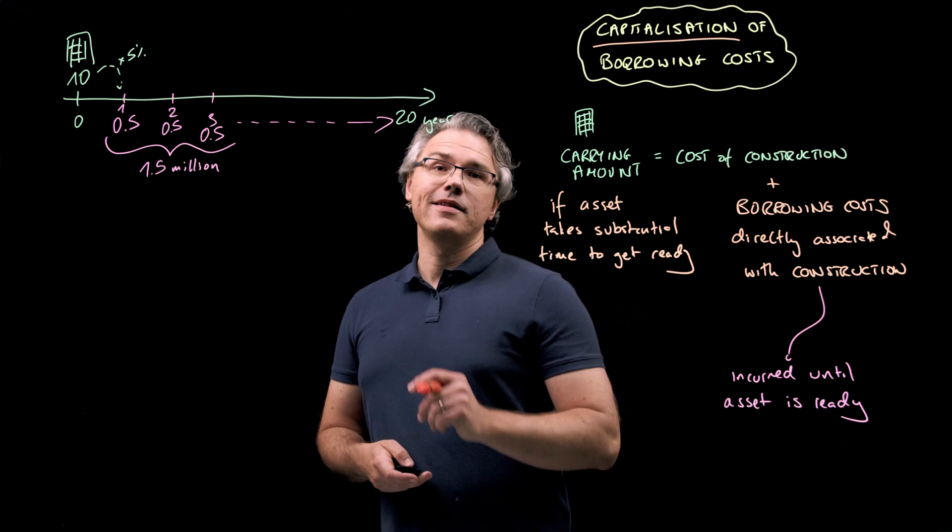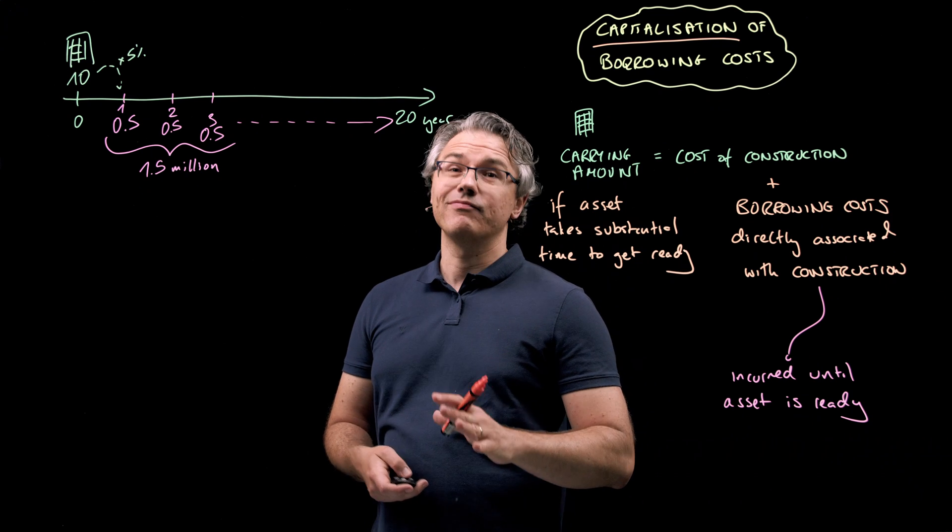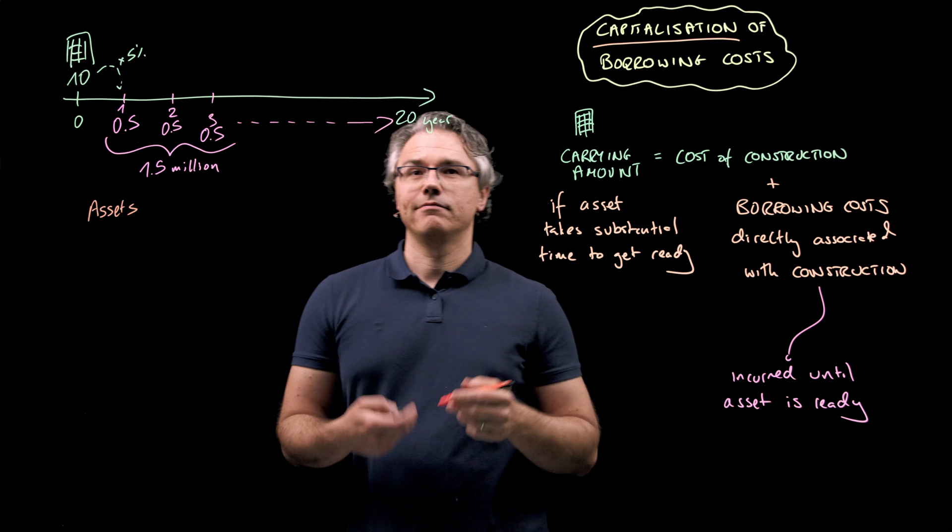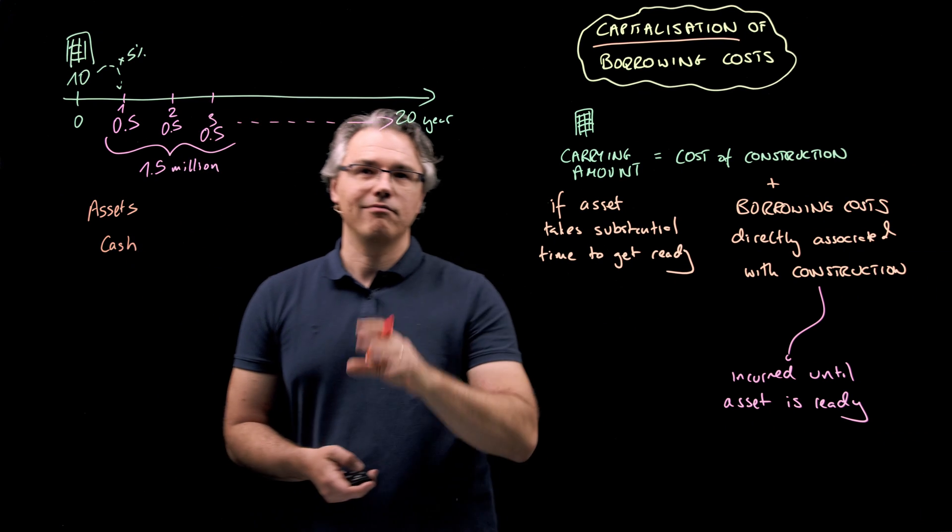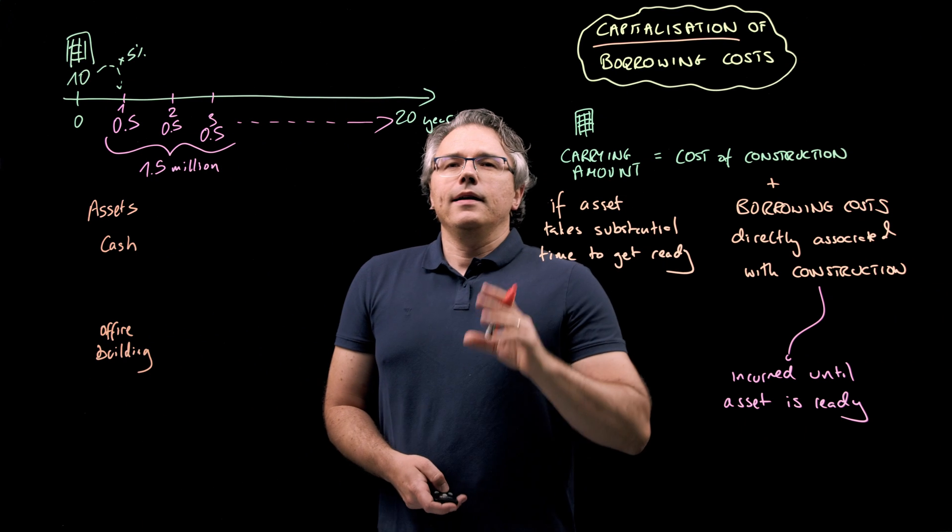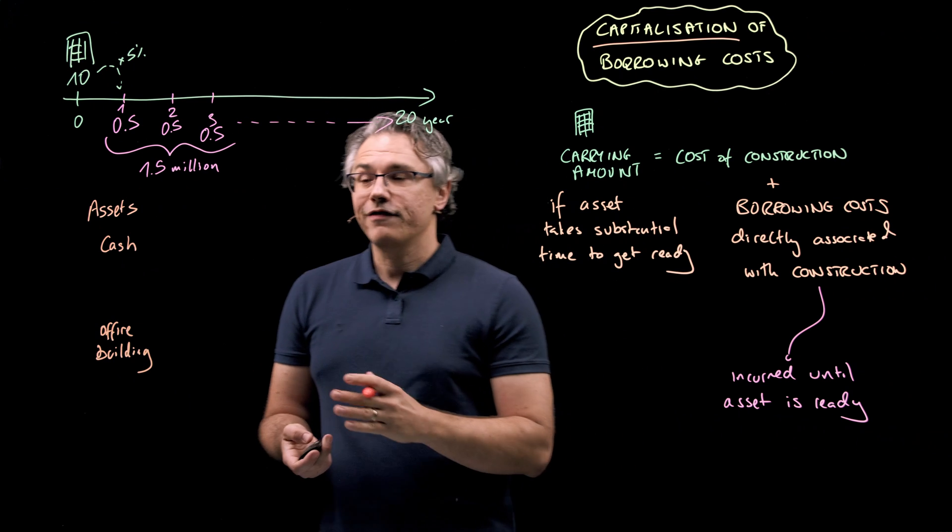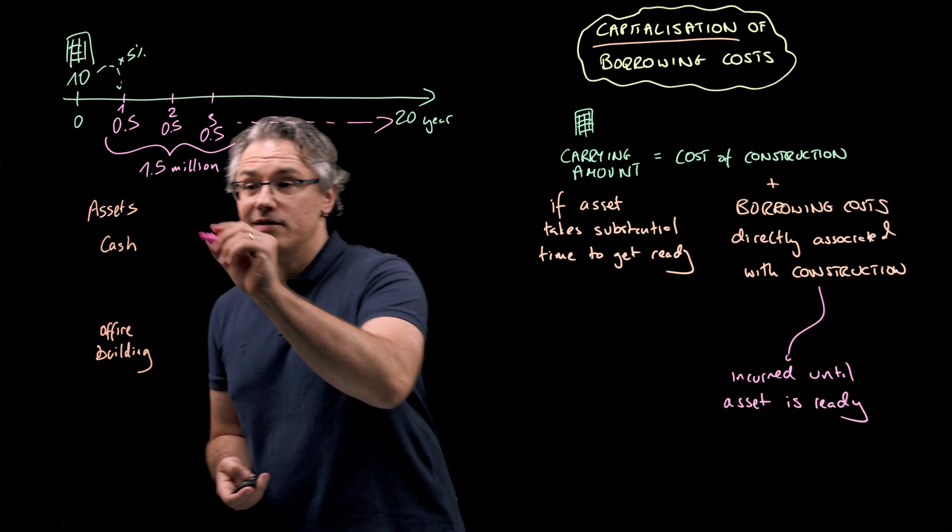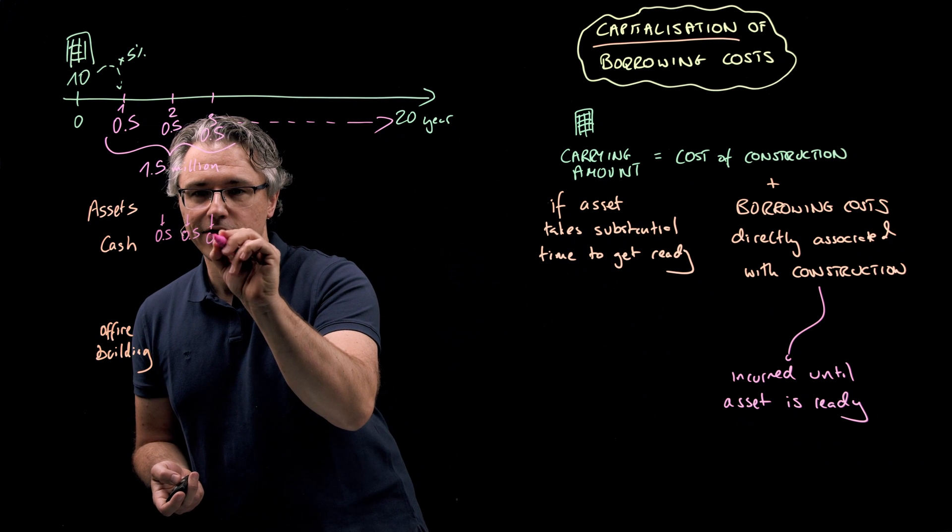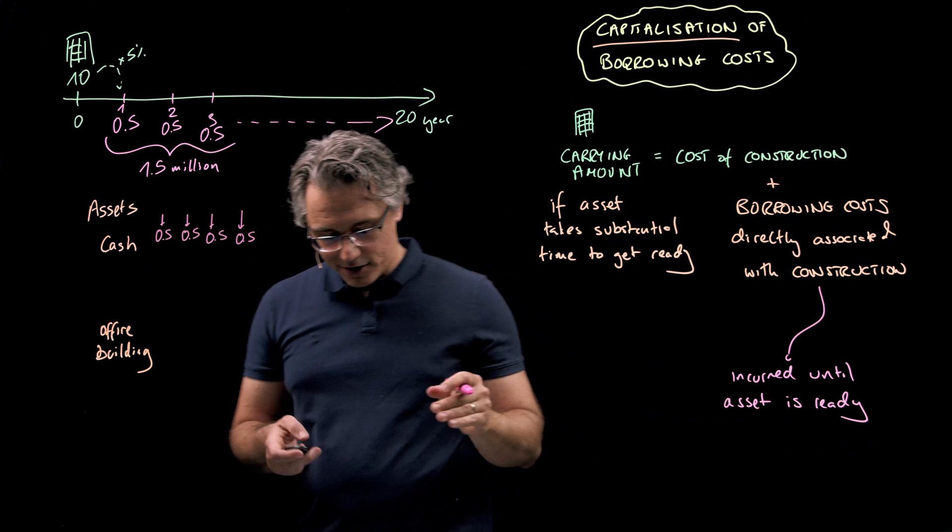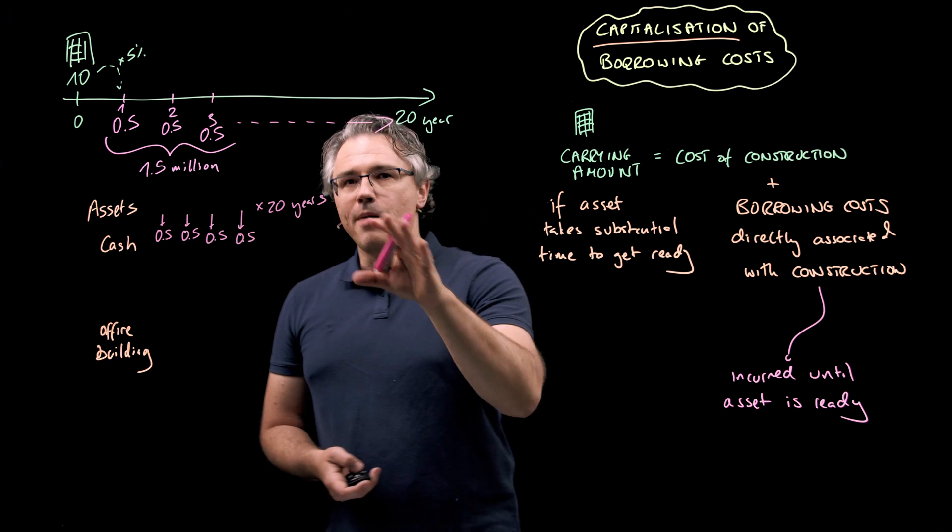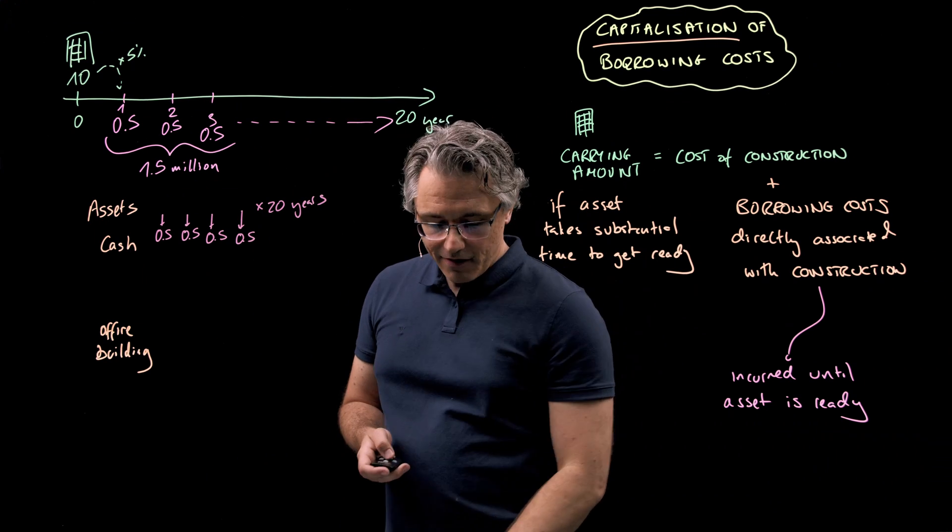Now, I really want to make sure that you understand what this means in the context of the balance sheet and the income statement. Let's imagine that under assets we've got cash and slightly lower down we've got the office building, which is being constructed. Under cash we'll have an annual outflow of half a million in interest or coupon payments. So a negative or downward arrow 0.5, 0.5, 0.5 meaning outflows and this is naturally going to go on for 20 years' time, all the way up to the bond's maturity date.